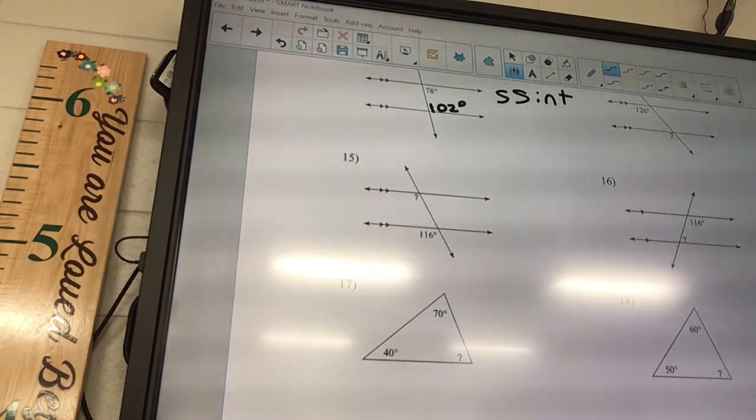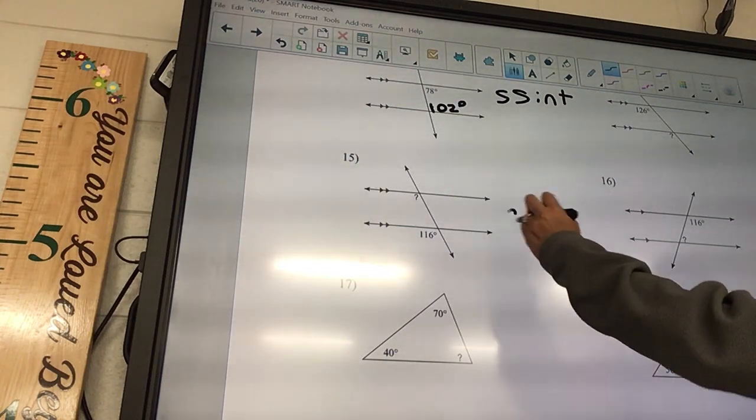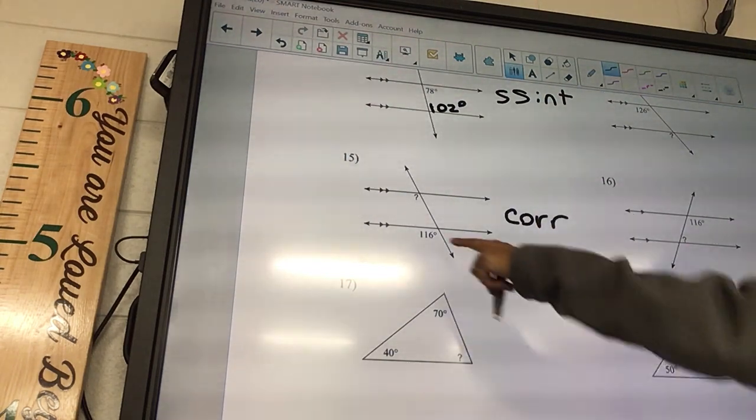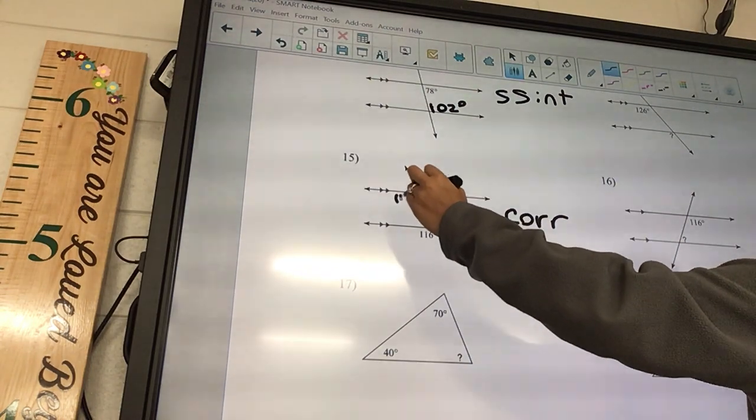Number 15, where's the question mark? Inside. Where is the 116? Outside. So we have one in and one out. What kind of angles are these? They're corresponding. And what do we know about corresponding, are they 180 or equals? They're equal, so if this is 116 then this has to be 116.